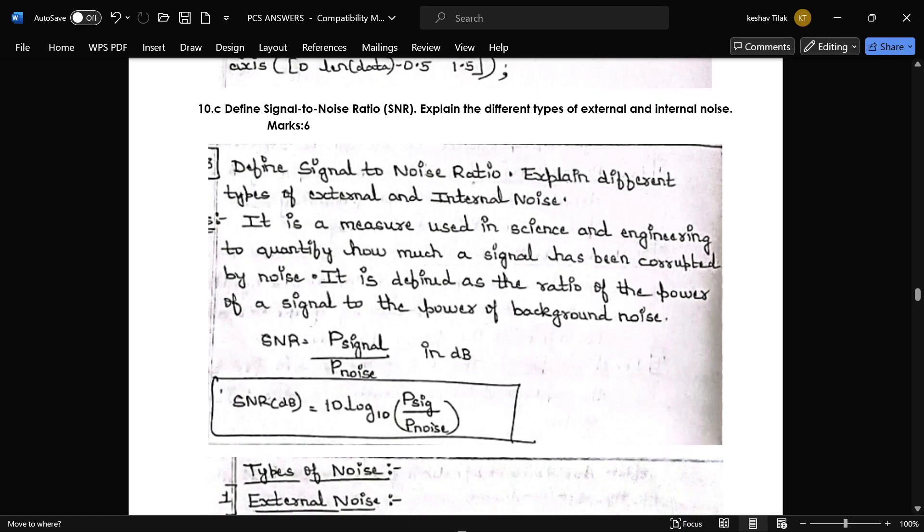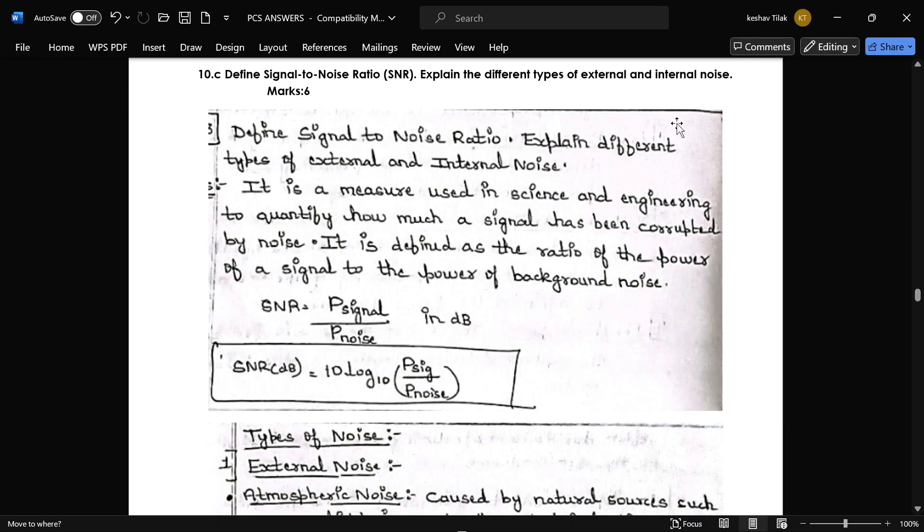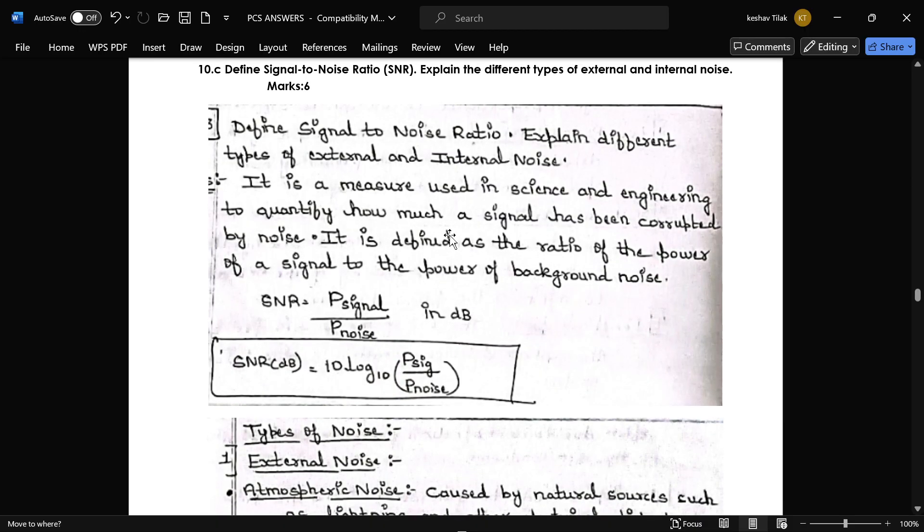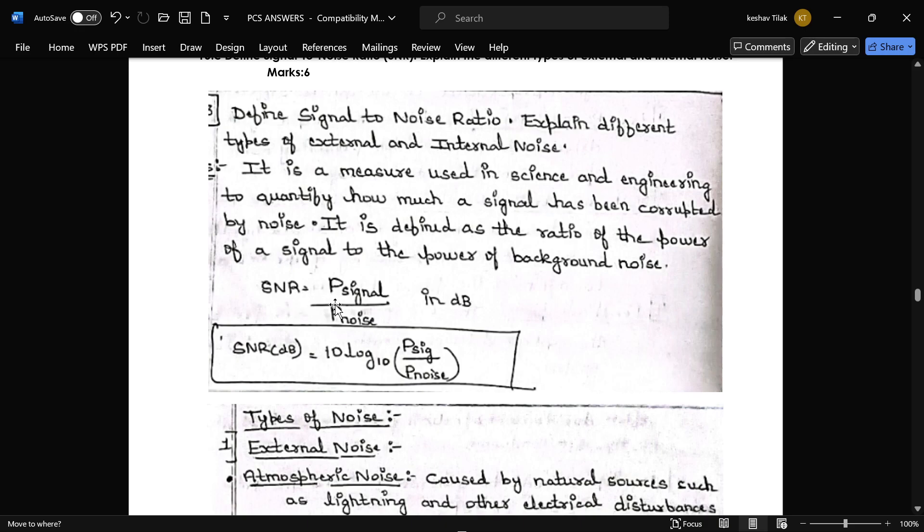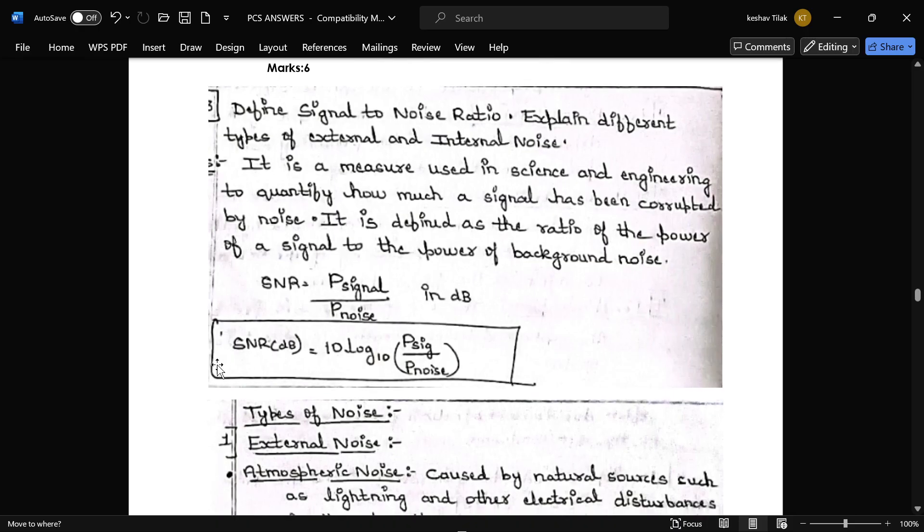Next define signal to noise ratio and difference between external and different types of external and internal noise. And this is the definition for signal to noise ratio. It is basically defined as ratio of power of signal to power of background noise. So here SNR is power of signal divided by power of noise in dB. And this is SNR is equal to 10 log to base 10 and power of signal by power of noise. This is the formula for that.